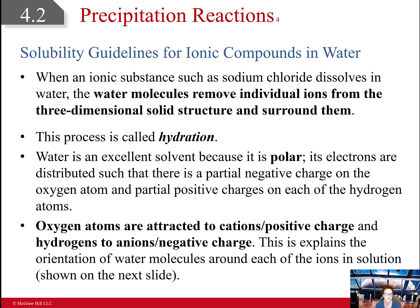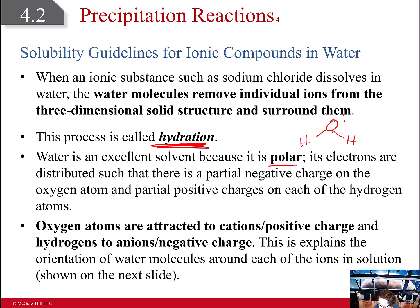When a substance like sodium chloride dissolves in water, the water molecules remove individual ions from the solid structure and surround them. That process is called hydration. Water is a great solvent because it is polar — it is negative on one end and slightly positive on the other. If you have something positive in solution, it's attracted to the negative end of the water. If you have something negative like chloride, it's attracted to the slightly positive end. That's how this actually happens.